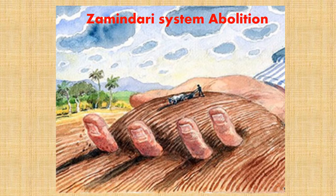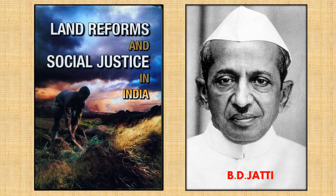The zamindari system is practically monarchy. After independence, states started abolishing the system, starting from Uttar Pradesh, then Madras, and so on. Restricting the hold of the feudal class on land was the main objective of the abolition of the zamindari system. This is one of the most important land reforms.